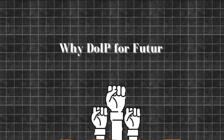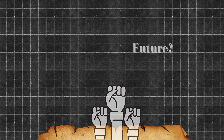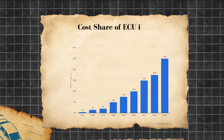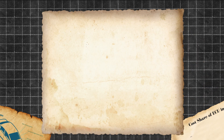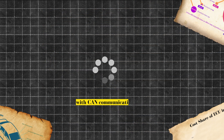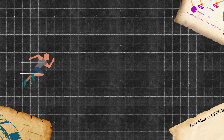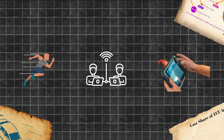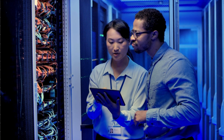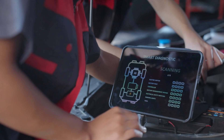So why does DOIP matter in future cars? Autonomous cars, EVs, and connected vehicles have dozens of ECUs generating tons of data. Diagnosing them over CAN would be like downloading a movie over 2G internet. DOIP brings speed, remote access, and parallel diagnostics — essential for remote troubleshooting, over-the-air updates, and high-end production lines.